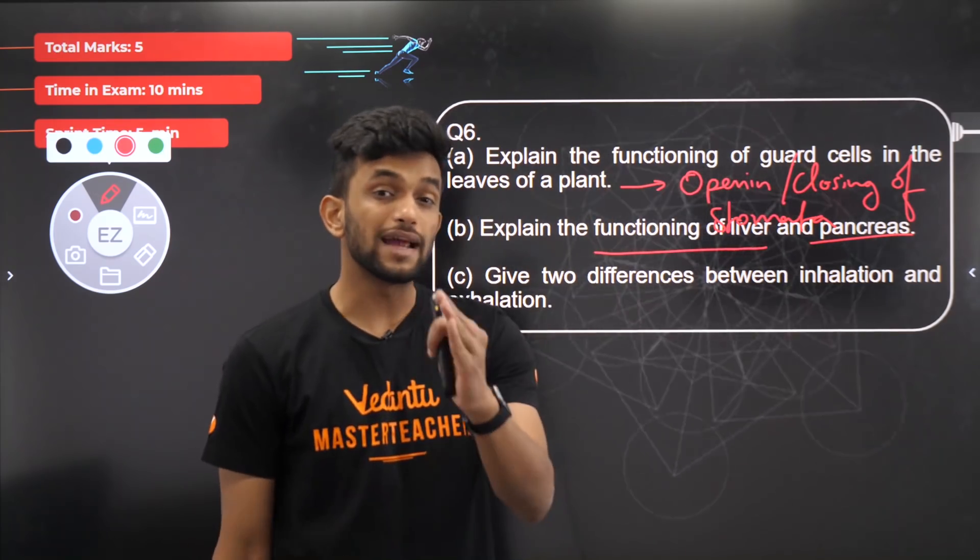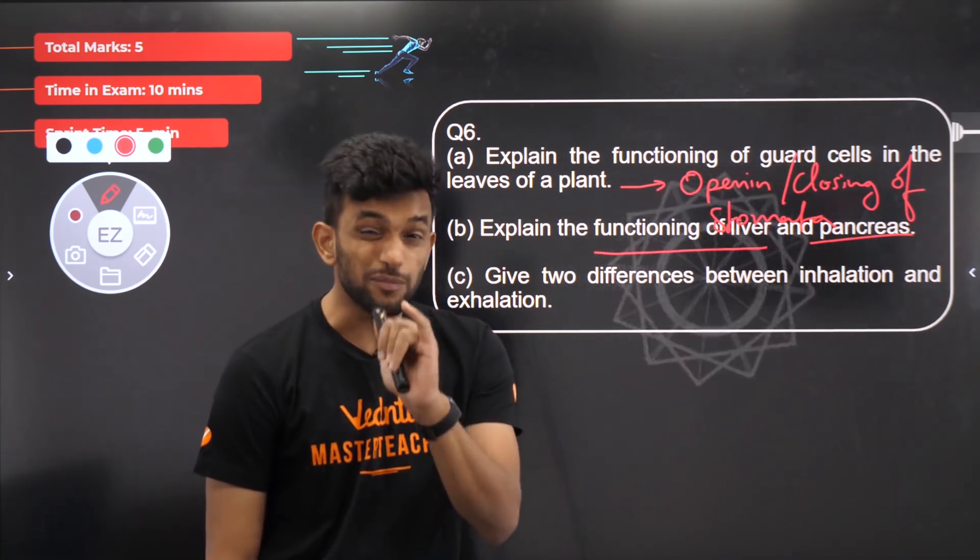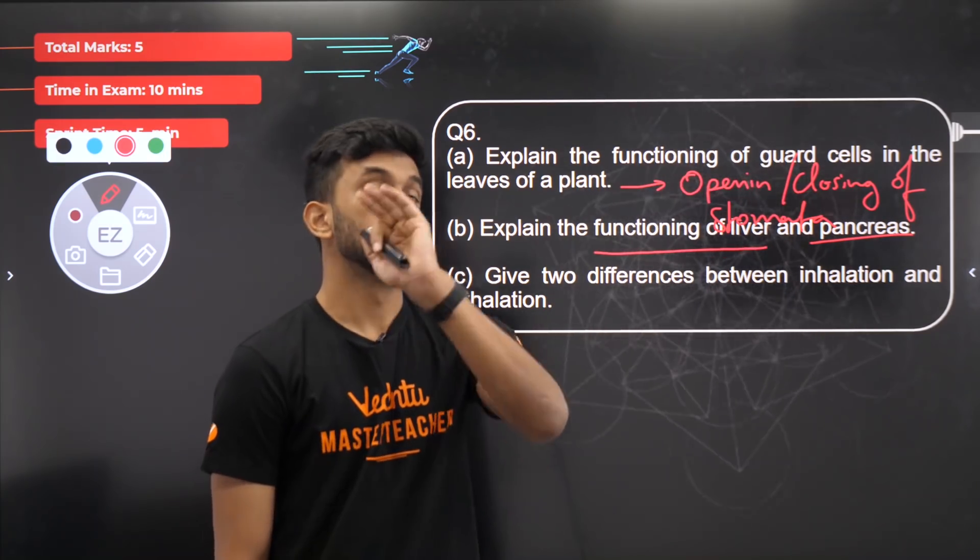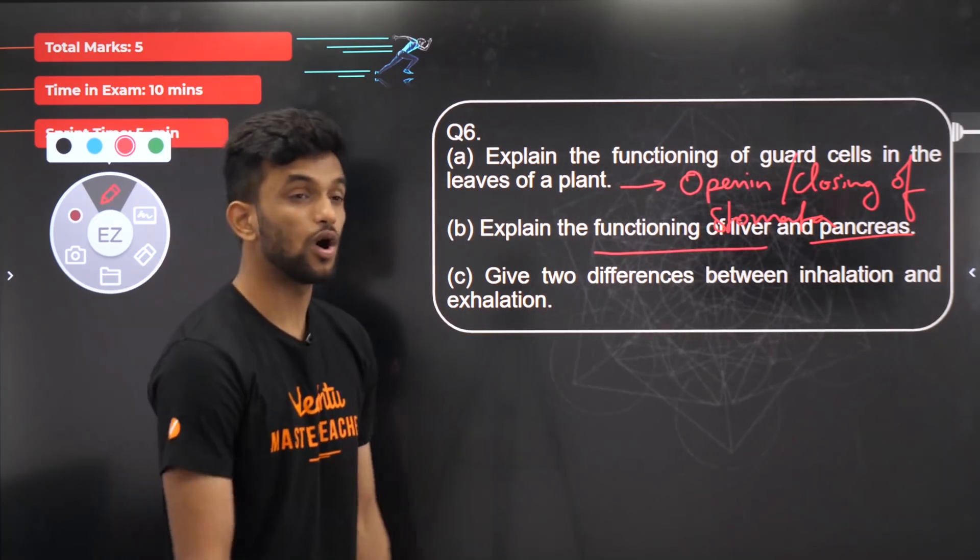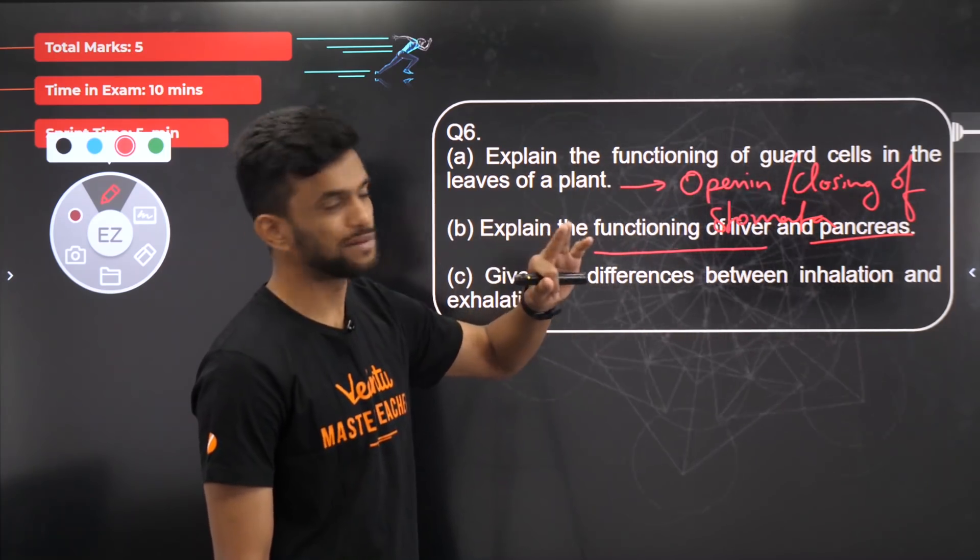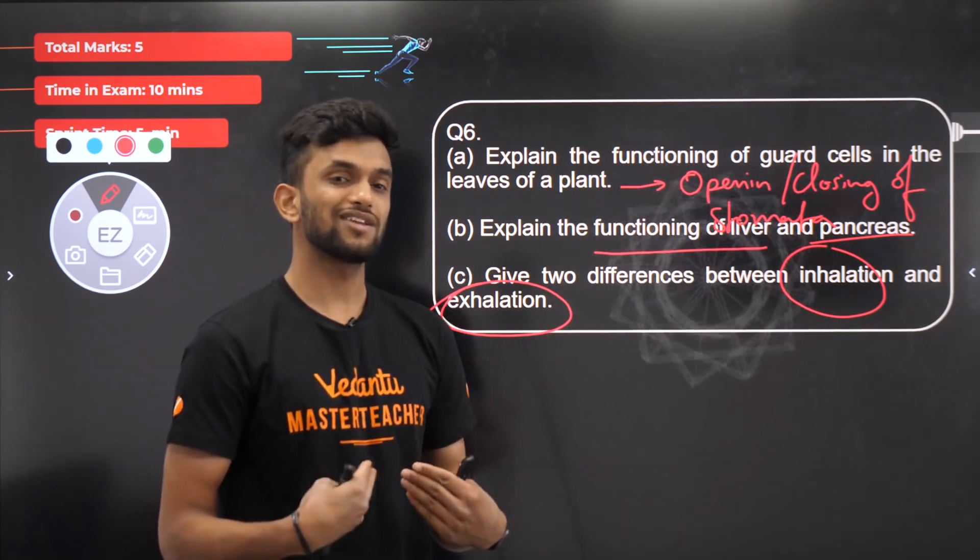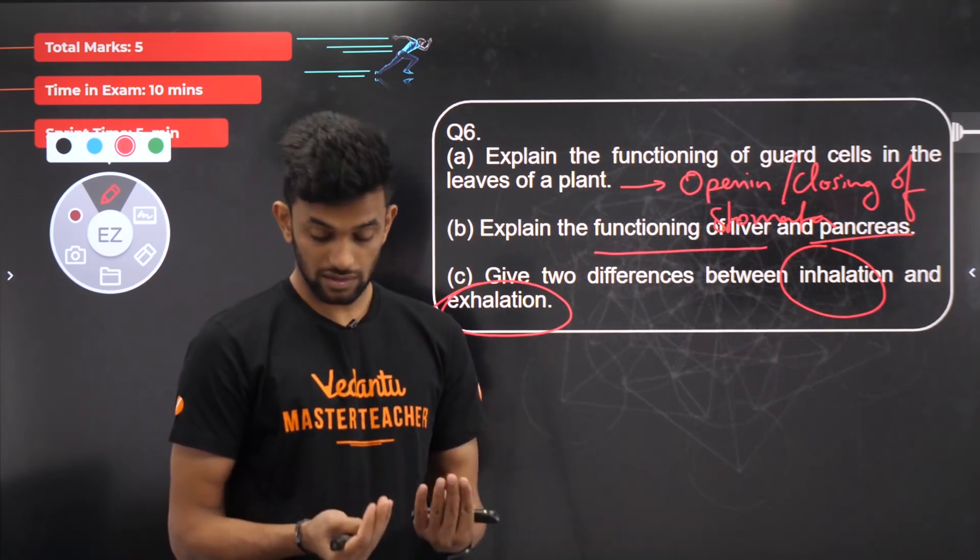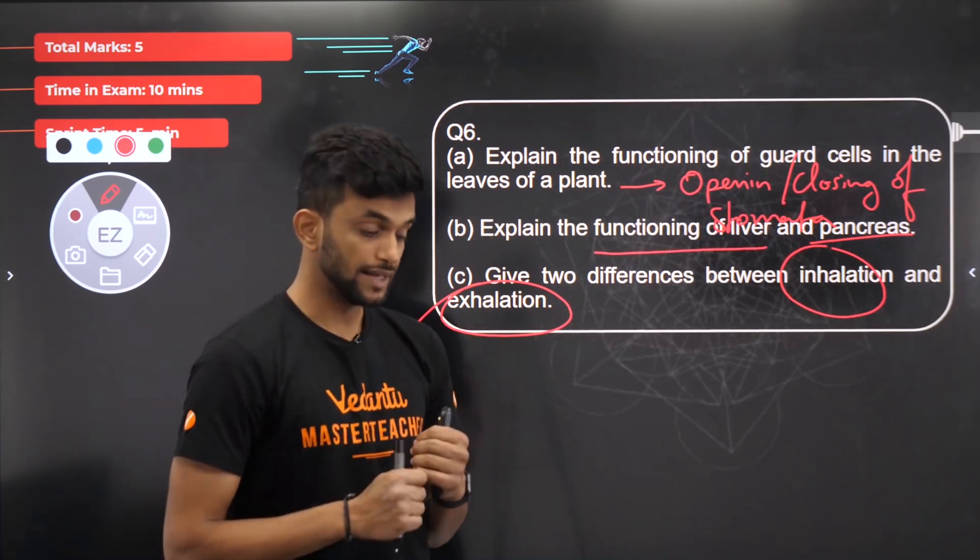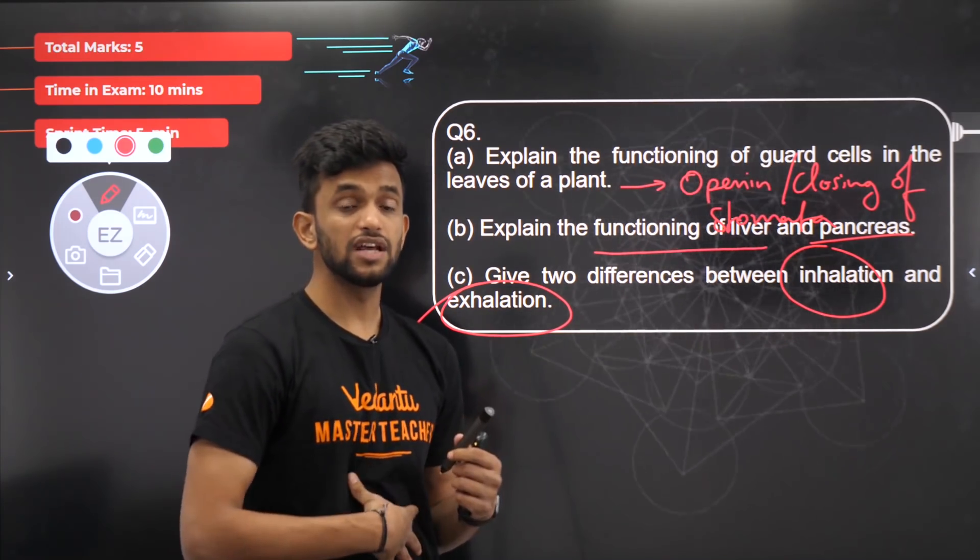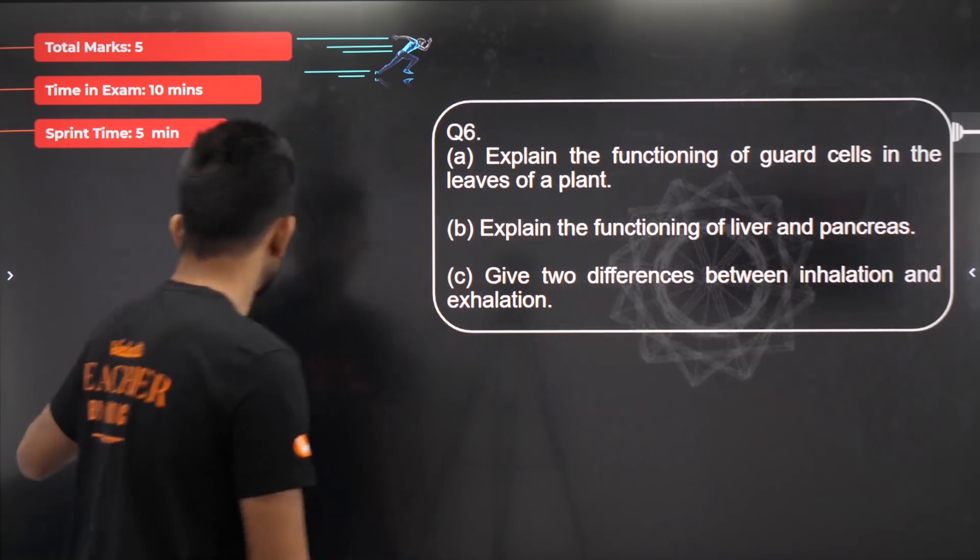Explain the functioning of the liver and pancreas. Liver produces bile juice which helps in emulsification of fat. Pancreas produces pancreatic juice which contains trypsin which helps in digestion of proteins, contains lipases which help in digestion of fat. It also contains various amylases, pancreatic amylase, which helps in digestion of carbohydrates. So basically pancreas contains enzymes for digesting everything. Give two differences between inhalation and exhalation. Inhalation is breathing in oxygen-rich air, whereas exhalation is giving out carbon dioxide-rich air. In inhalation the diaphragm contracts, whereas in exhalation the diaphragm relaxes.